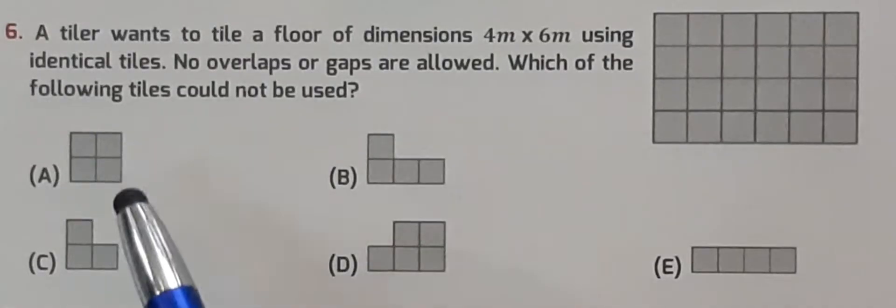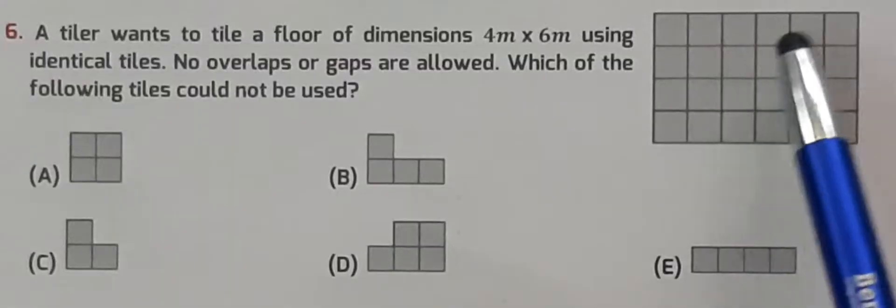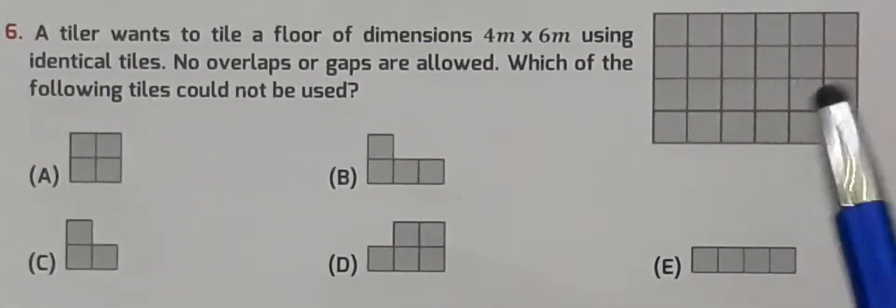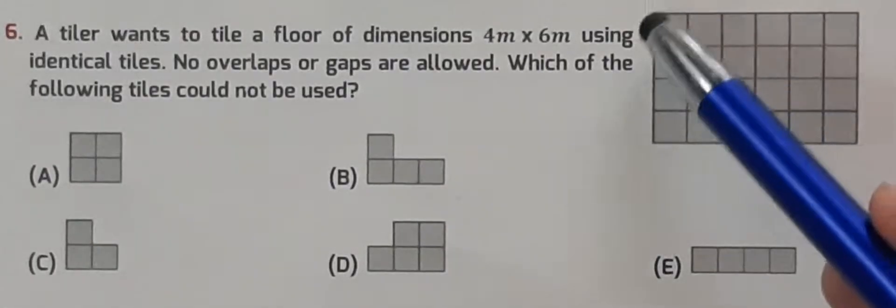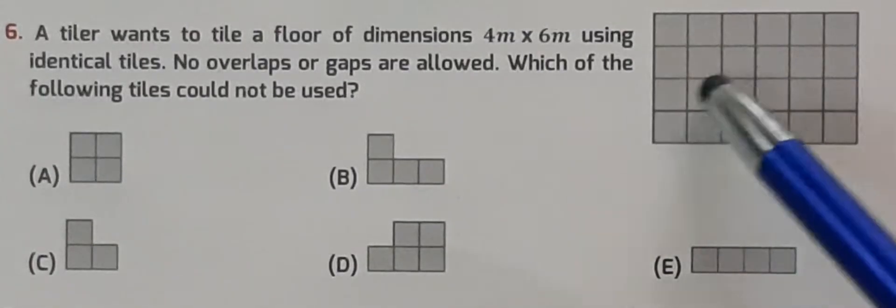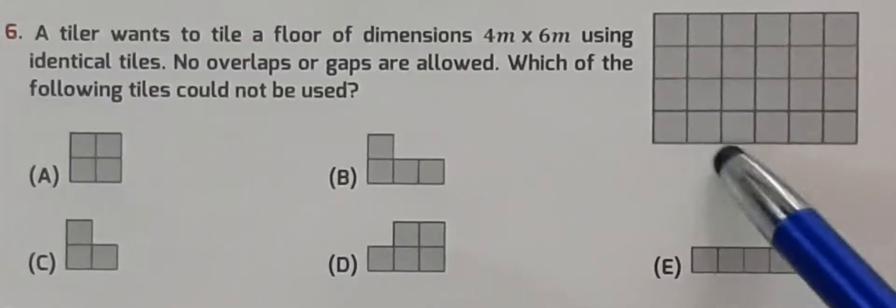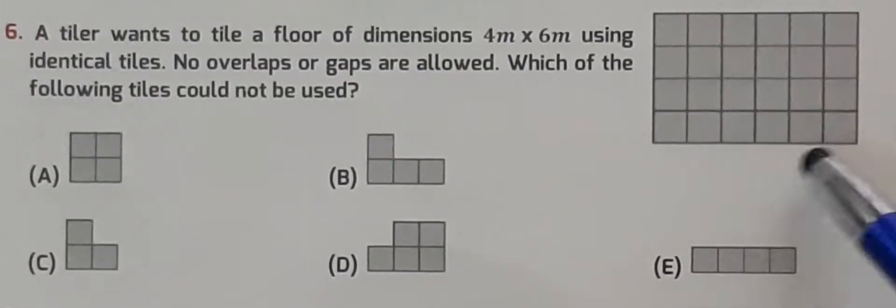So first we will try this option, it is a square. 1, 2, 3, 4, 5, 6 - six squares fit in this area. We can see 1 square, 2 square, 3, 4, 5 and 6. It means it can be used so it is not the right option.